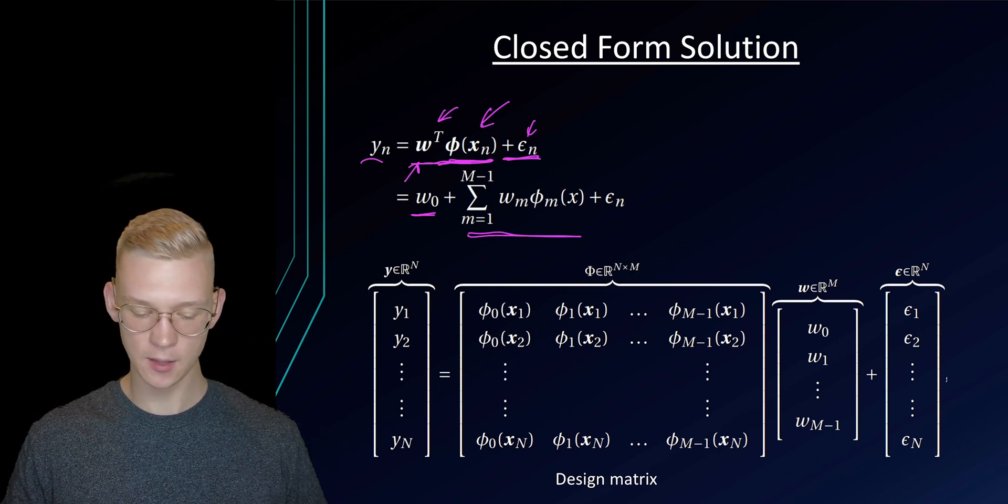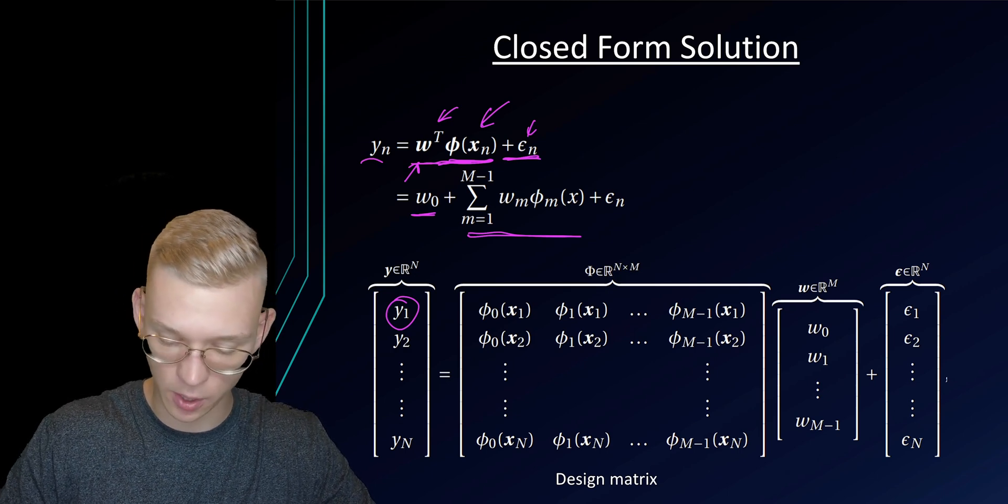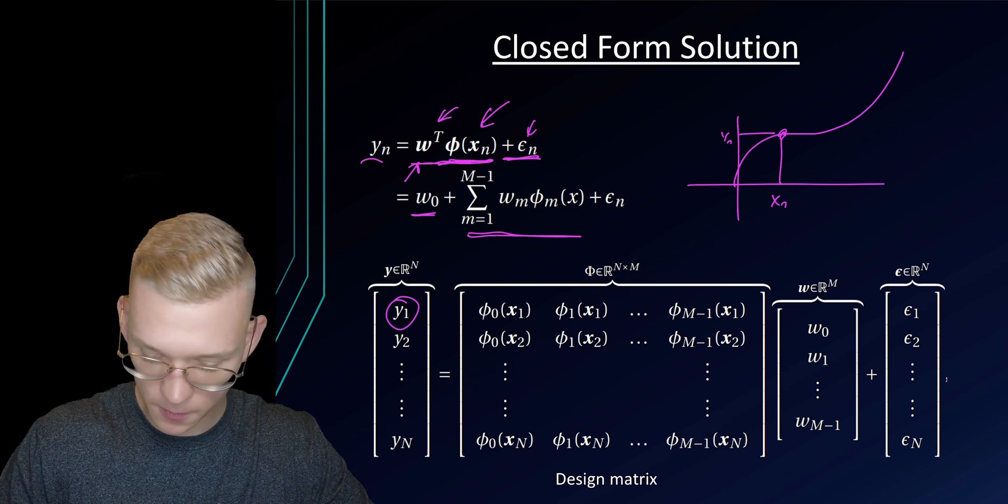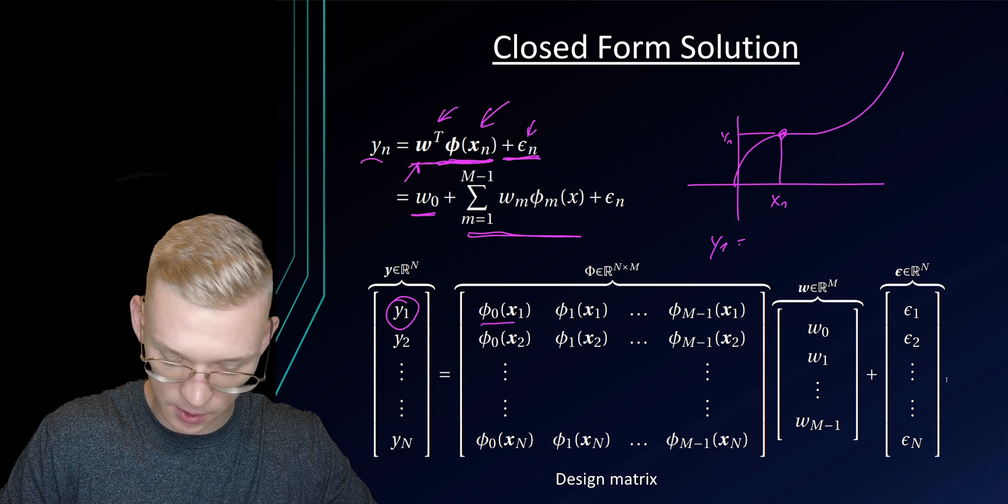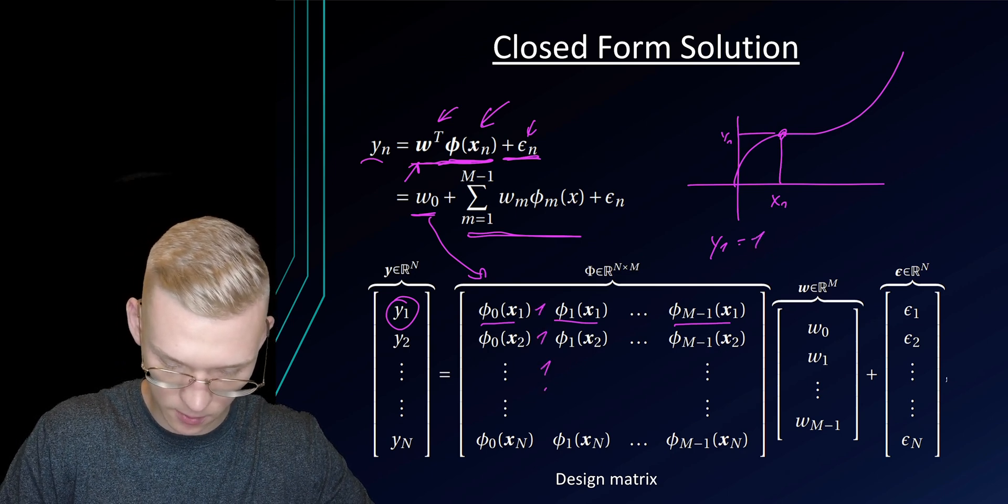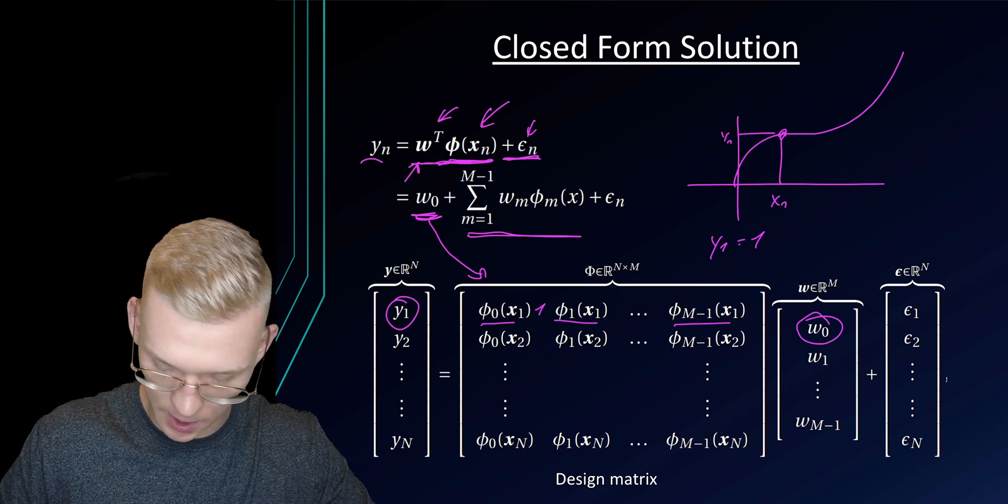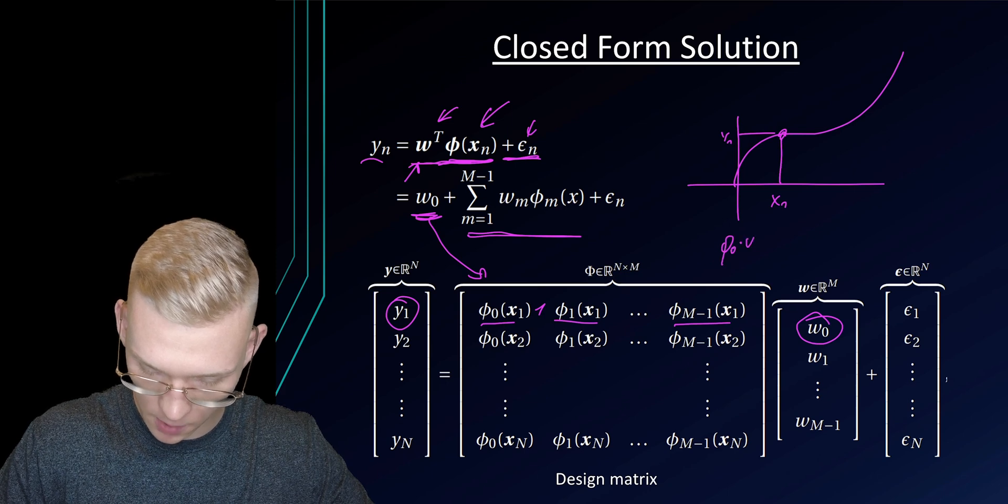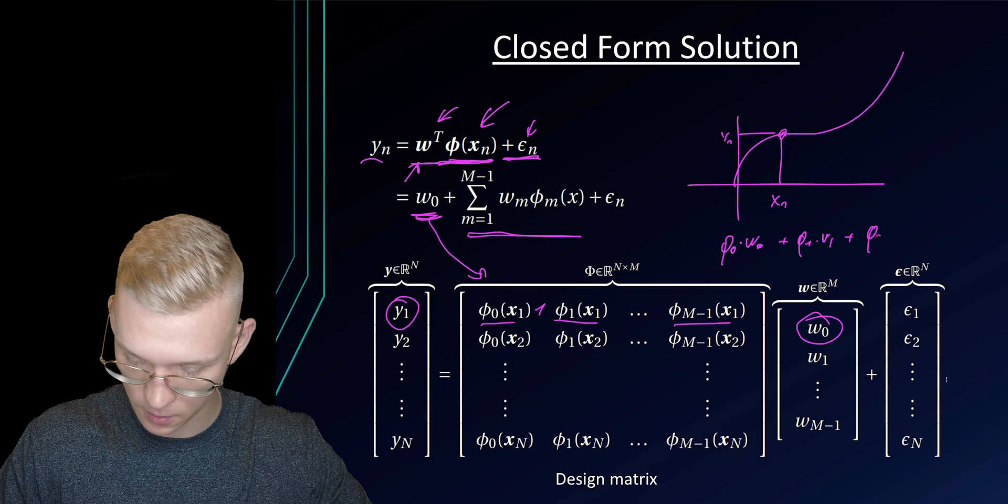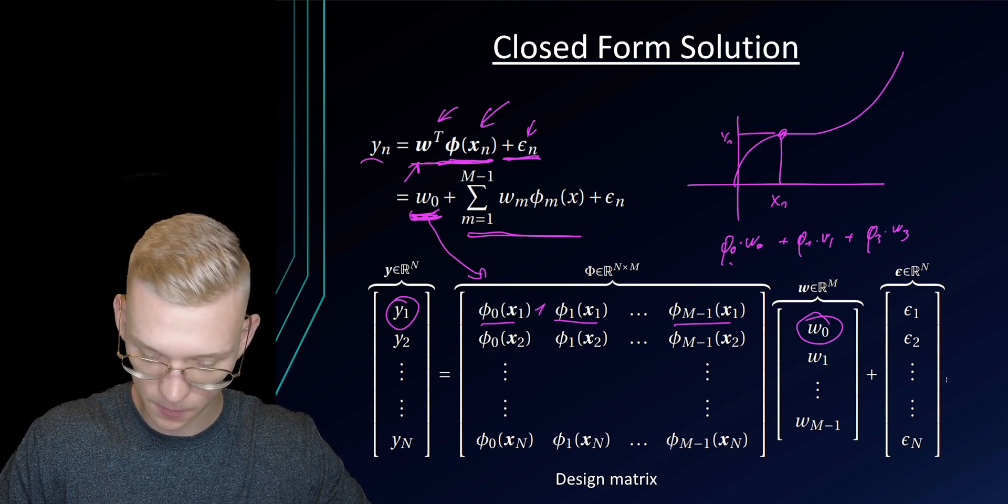So here we have the basis, the dummy function w0 and here we have our non-linear models. Now we can get a matrix formulation from that statistical model. For our observation y1, we say that y1 is equal to these basis functions. So we have a 1, this is always a 1. So we have phi 0 times w0 plus phi 1 times w1 plus phi 3 times w3. We want the weight, so the bias, to be just 1. So that's why our phi 0 is 1.